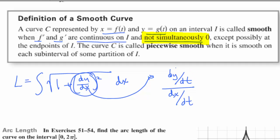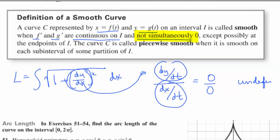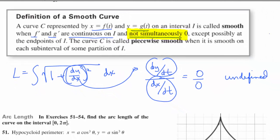If these two derivatives were simultaneously zero, we would have zero over zero, which of course is undefined. And then we would have an integral in terms of something that's undefined, which of course you cannot do.